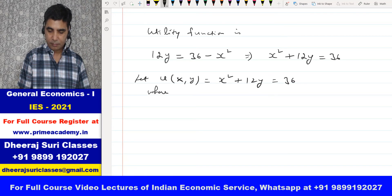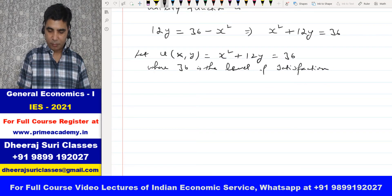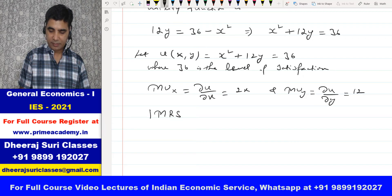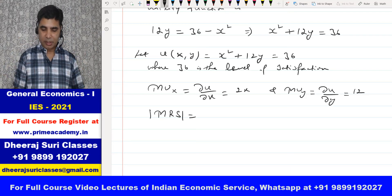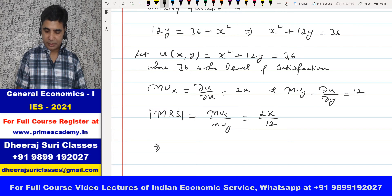Where 36 is the level of satisfaction which the consumer is getting. What is MUx here? MUx is ∂u/∂x, which is 2x, and MUy would be ∂u/∂y, which is 12. So what is the absolute of marginal rate of substitution? MRS is minus MUx by MUy; its absolute is MUx/MUy = 2x/12, which means absolute of MRS is x/6.